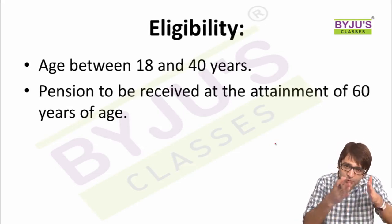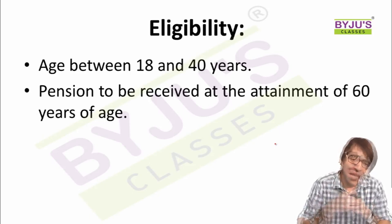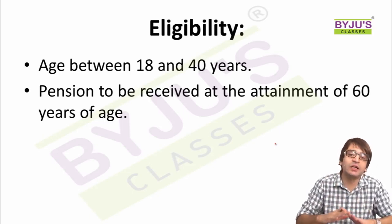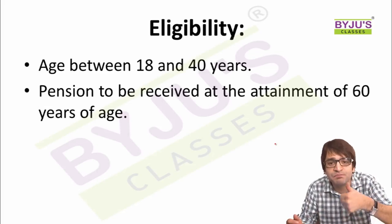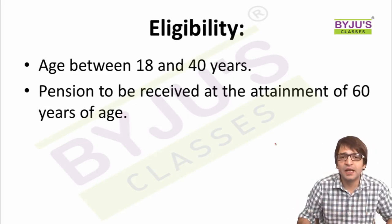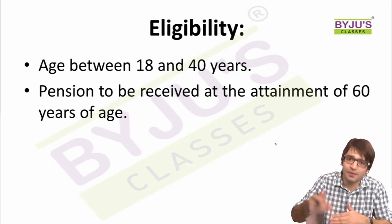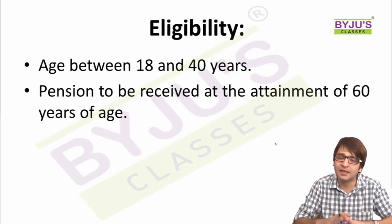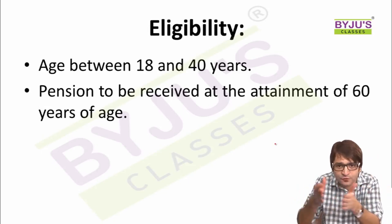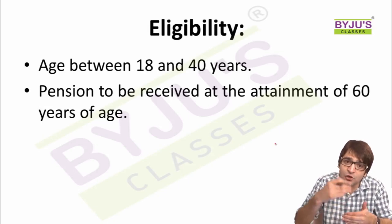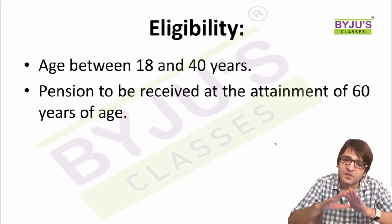Eligibility: anyone between the age group of 18 to 40 years can subscribe to Atal Pension Yojana. Pension is received after completing 60 years of age. From age 18 to 60, one pays the premium. Depending on contributions made, pension can be 1,000, 2,000, 3,000, 4,000, or 5,000 rupees per month. This scheme is open to all Indians aged 18 to 40 who contribute a fixed sum.